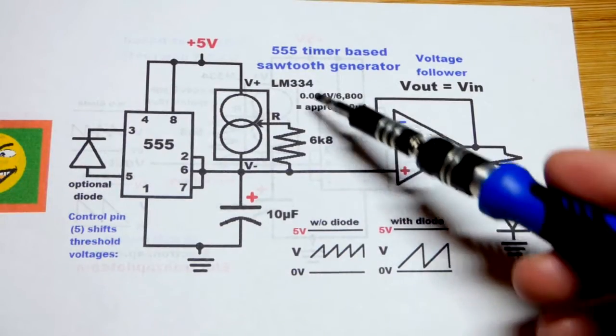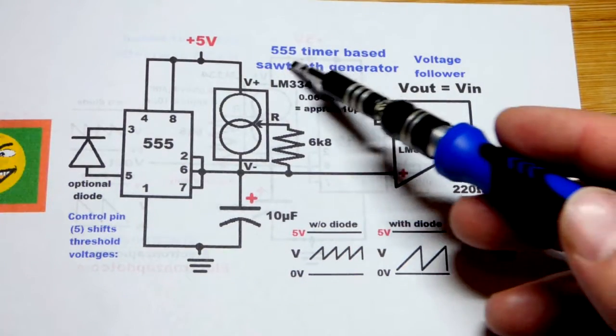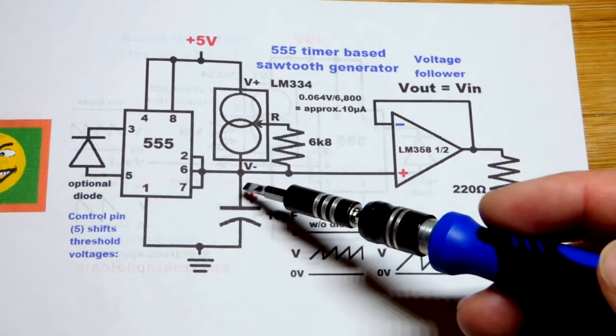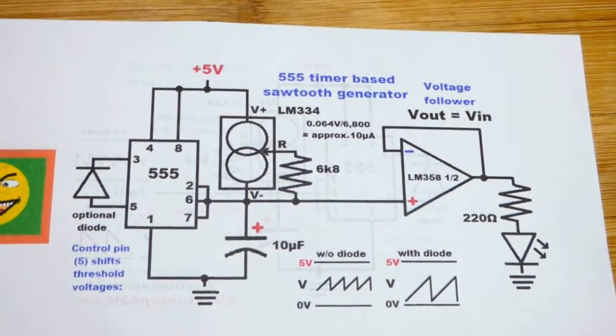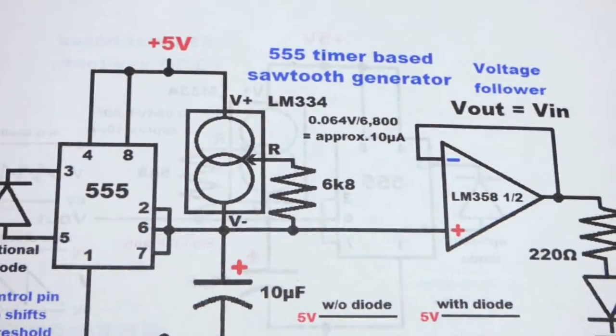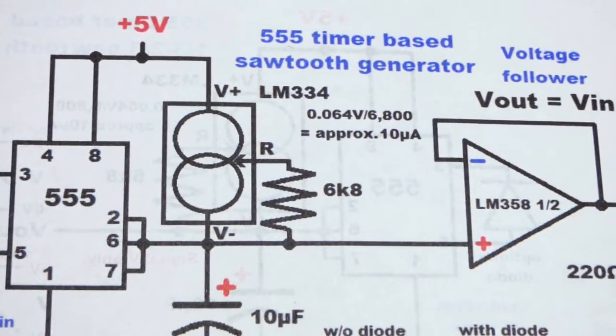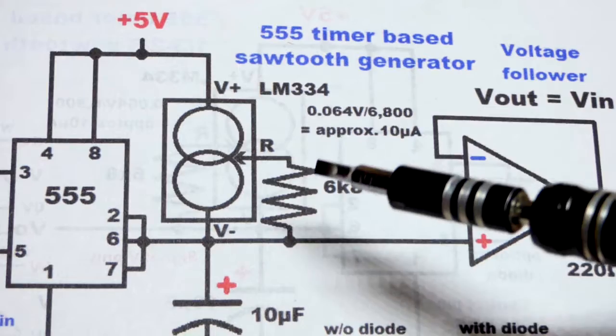So now in this video we're going to come back to a sawtooth generator circuit that I made with the 555 timer. We did that by taking the timing capacitor and giving it a steady current. So this is the LM334.